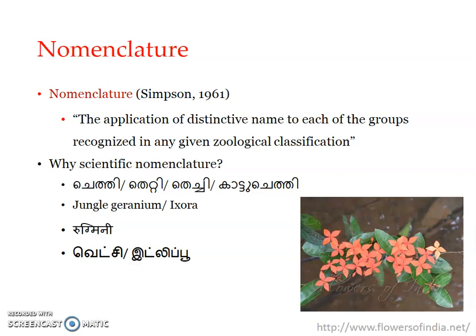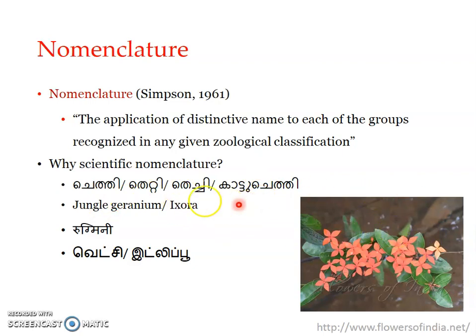Nomenclature is the formal naming of taxa in the scheme of classification. For example, a particular flower has many different names across parts of Kerala and India — four different Malayalam names, English names, Hindi, and Tamil names like 'Betsy' and 'Italy' — all referring to the same flower. If you try to communicate using just local names in different parts, people may not understand which organism you mean. This illustrates why a scientific system of nomenclature is so important.